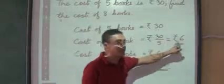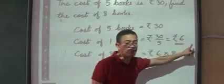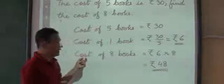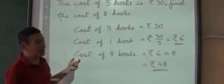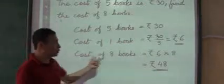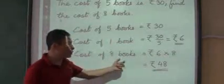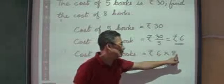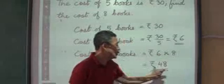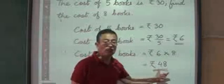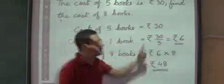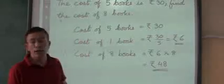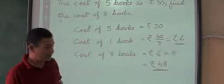So the cost of 1 book will be 30 rupees divided by 5, which gives us rupees 6 for 1 book. Then we are finding out the cost of 8 books — cost of 1 is 6, so you multiply it by 8, and we get rupees 48. This was the method that you were using.